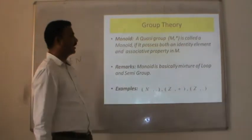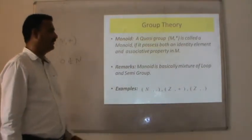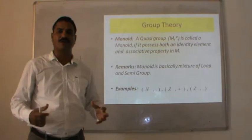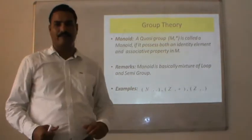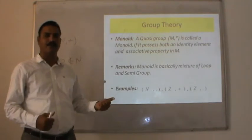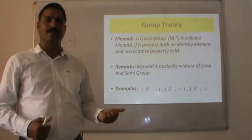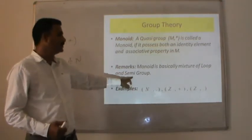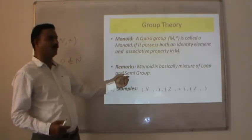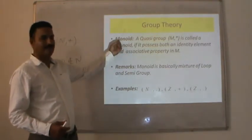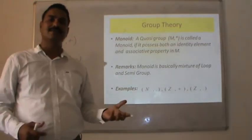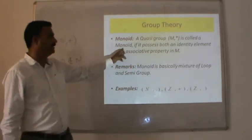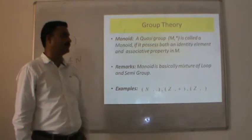Monoid: a quasi-group (N, *) is called a monoid if it possesses both the identity element property and the associative property. Monoid is basically a mixture of loop and semi-group — in a loop we have the identity element property but no associative property, while in a semi-group we have the associative property but no identity element property. So any quasi-group (G, *) is called a monoid if it possesses both an identity element and the associative property.